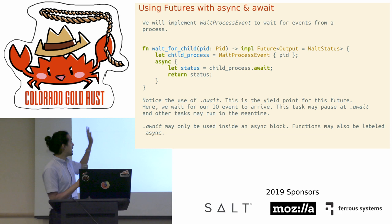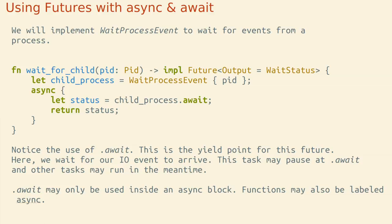Our idea is to implement a WaitProcessEvent future. We will asynchronously wait for our process to finish. We're going to write a function called wait_for_child, spawn our WaitProcessEvent with a process identifier PID, and use an async block. We say child_process — which is our WaitProcessEvent — dot await, and that's going to wait for a status to come, and we return that status. The return type is some type that implements Future where the Output is a WaitStatus.